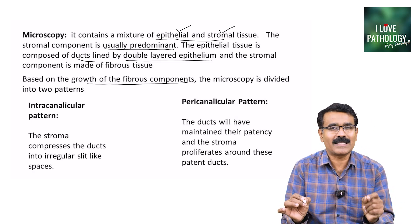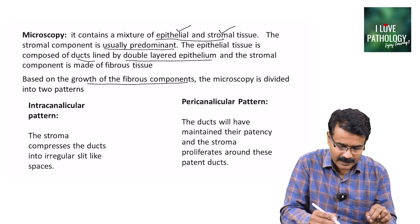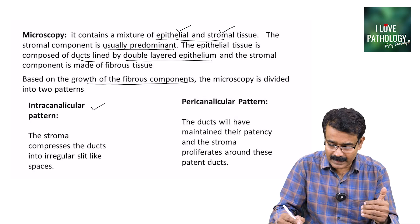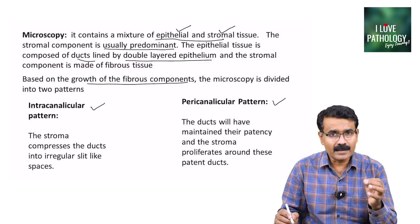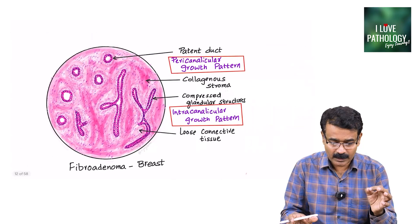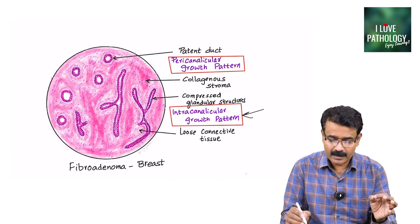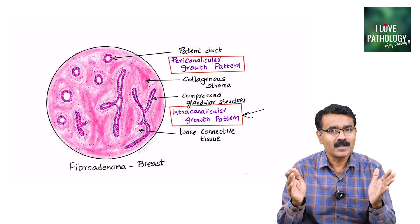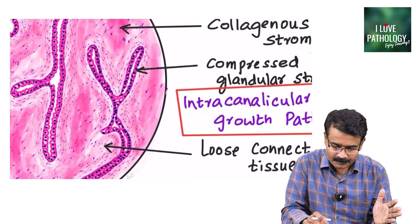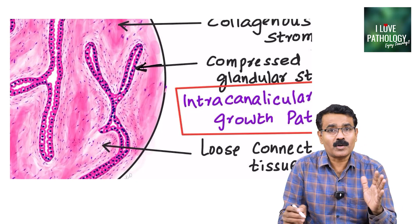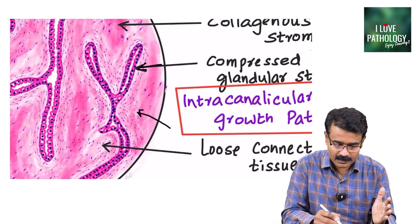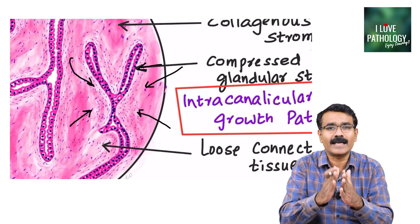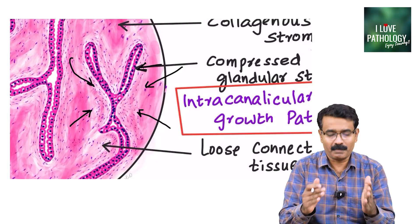Based on the growth of the fibrous component, the microscopy of fibroadenoma is classically divided into two patterns. In the intracanalicular pattern, the glands get compressed by the proliferation of the fibrous stroma. The fibrous stroma proliferates and compresses the glandular structures into slit-like spaces — that is the intracanalicular pattern.